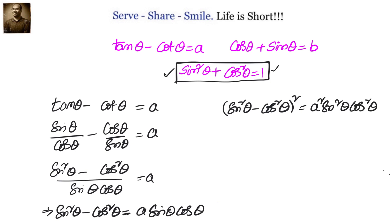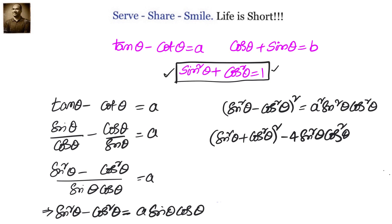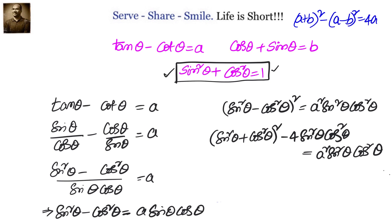Let us open the brackets. Sin square theta minus cos square theta can be written as sin square theta plus cos square theta, whole square, minus 4 sin square theta cos square theta. We are using the formula: A plus B whole square minus A minus B whole square equals to 4AB. We use this specific formula because we know sin square theta plus cos square theta equals to 1.